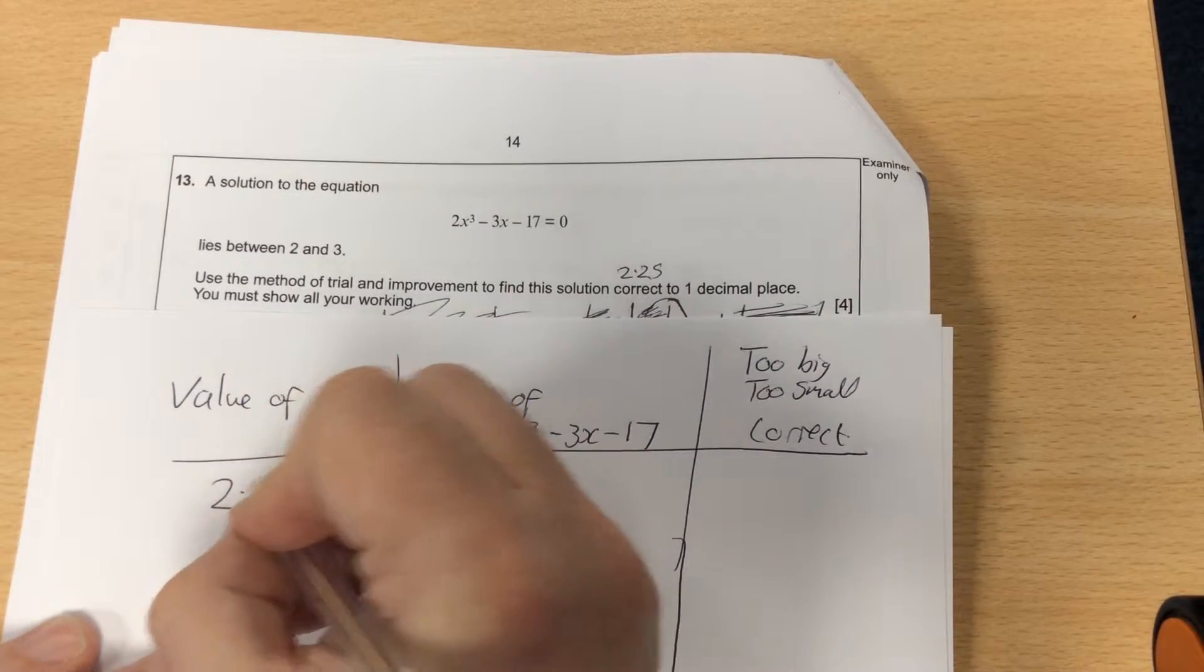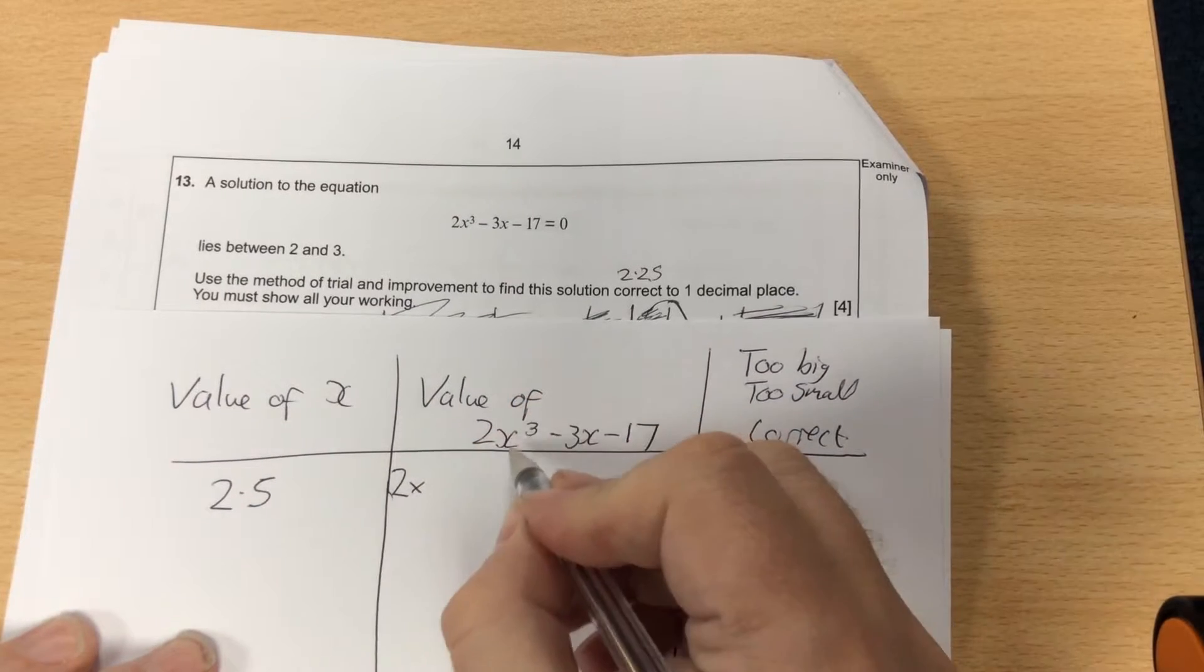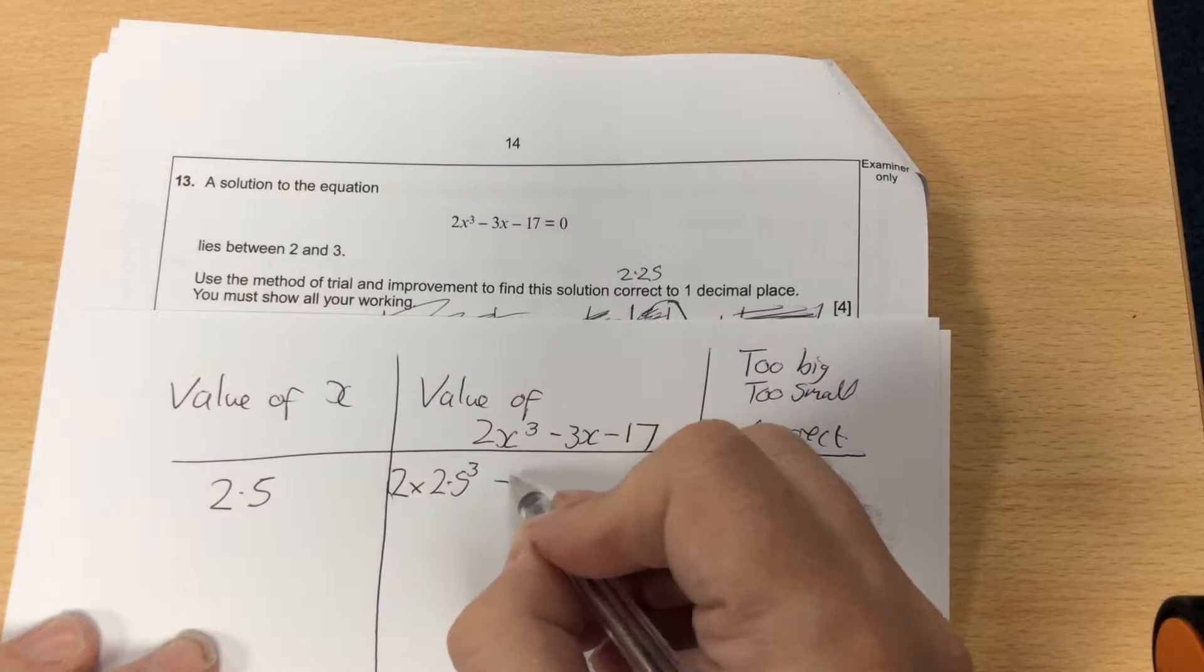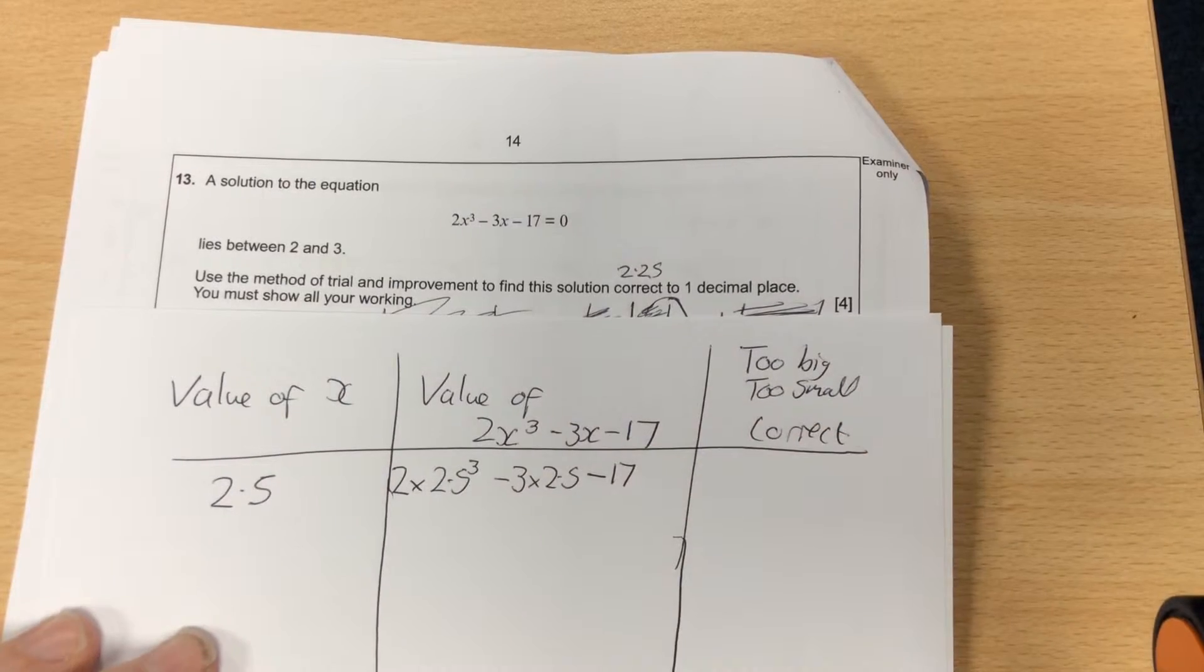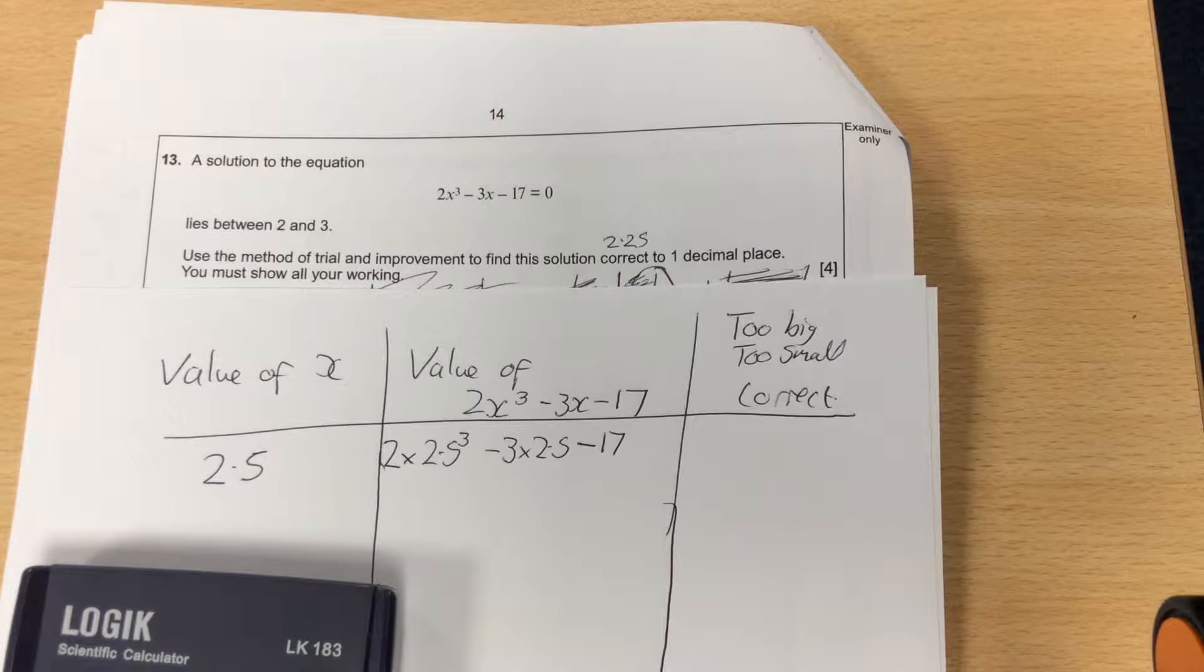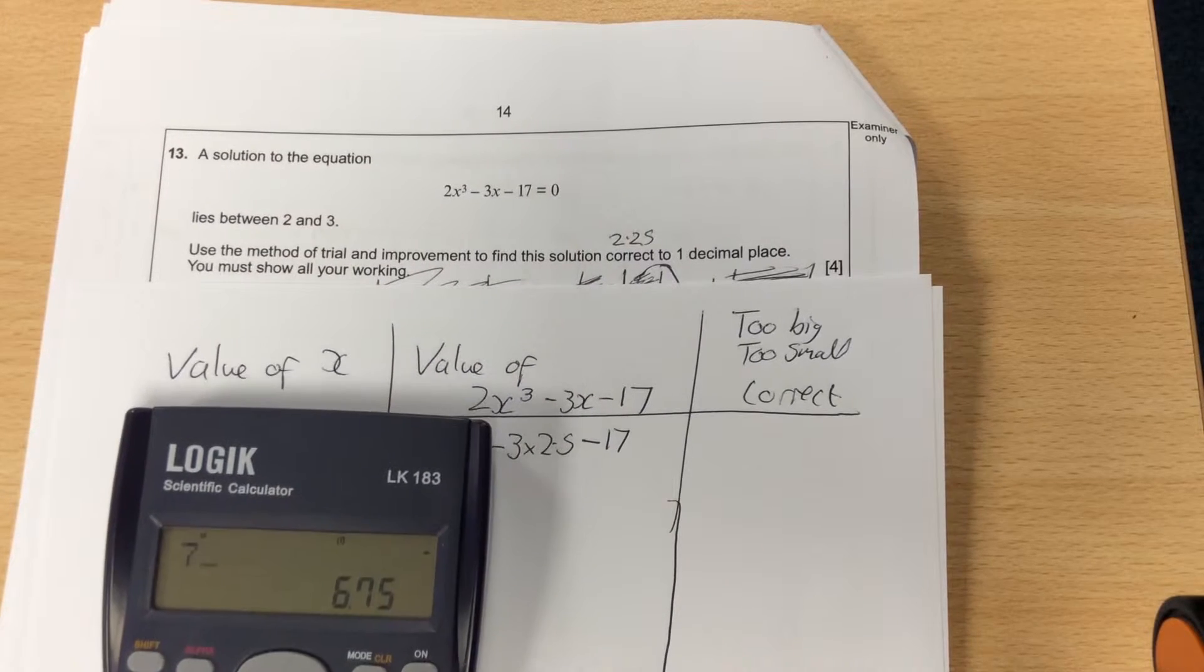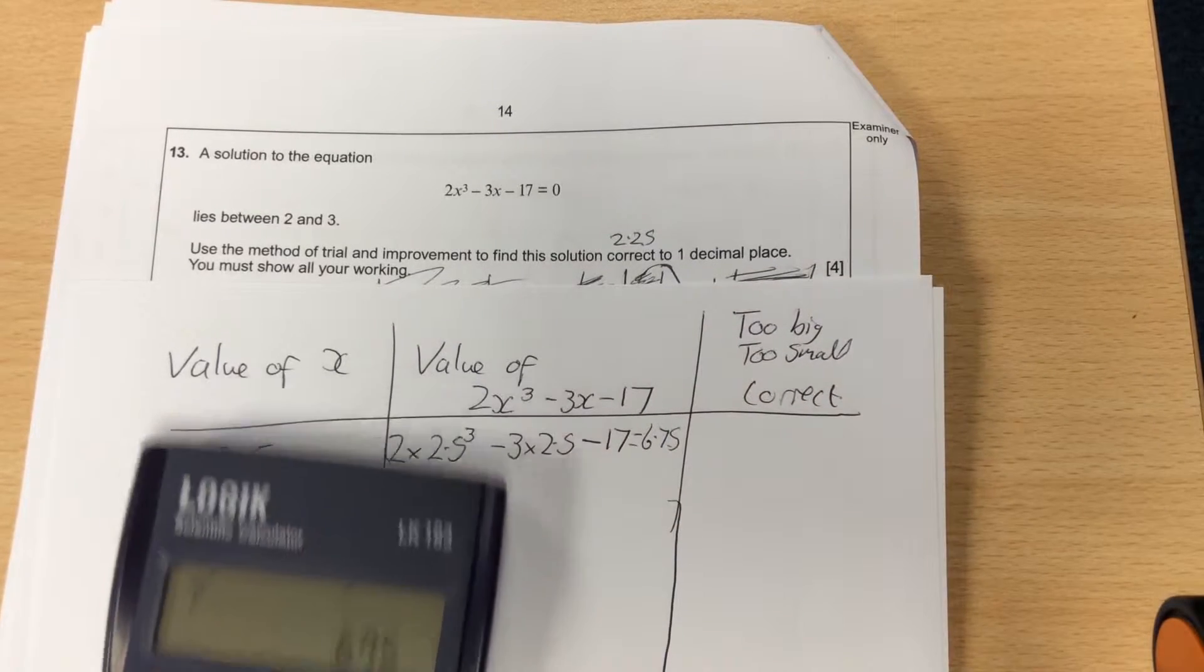So let's start with a value in the middle of 2 and 3, so 2.5. That means I'm doing 2 times 2.5 cubed, take away 3 times 2.5, take away 17. When I input this onto my calculator, it becomes 2 times 2.5³ - 3 times 2.5 - 17, and that comes up as 6.75. So because that's 6.75, that's too big.